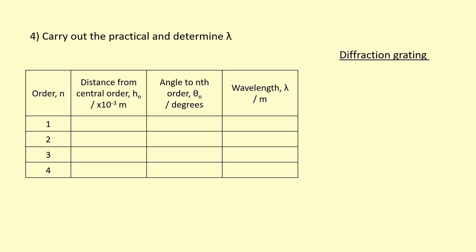To analyse the results from the diffraction grating practical, you've already done most of the work — you've already calculated the wavelength for each order. All you have to do is find the average of those values and then compare it to what was written on the laser.